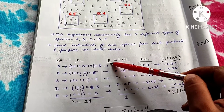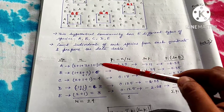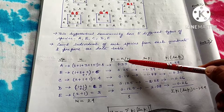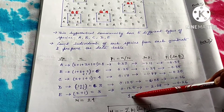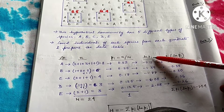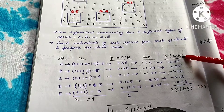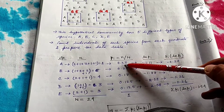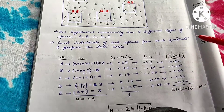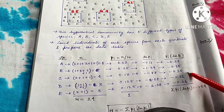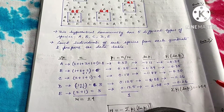Now find out the relative abundance by dividing small n by capital N, and you will get this column. Always remember that the summation of all these values should be 1. Now calculate the ln(pi) value in your calculator, then multiply each ln(pi) with their respective pi value to get this column. Sum up all these values and get the summation of pi·ln(pi) equal to minus 1.54.